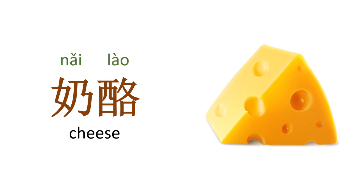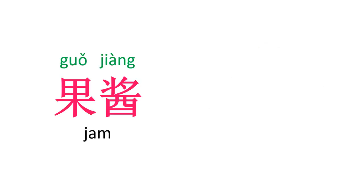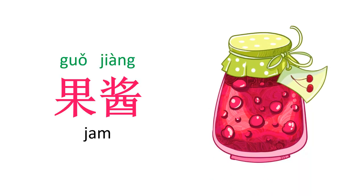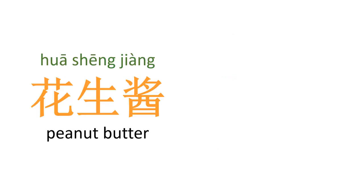面包 — bread. 黄油 — butter. 奶酪 — cheese. 果酱 — jam.